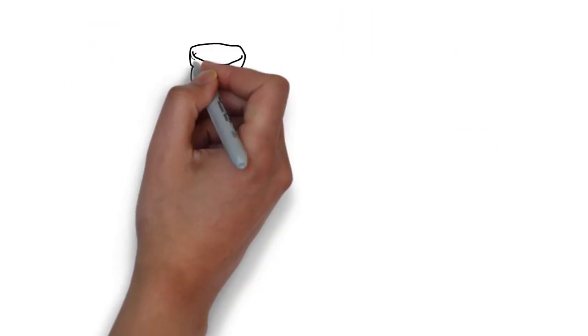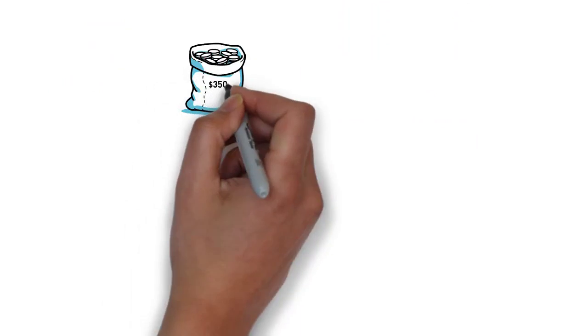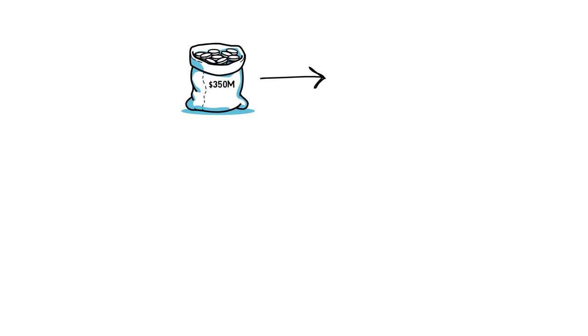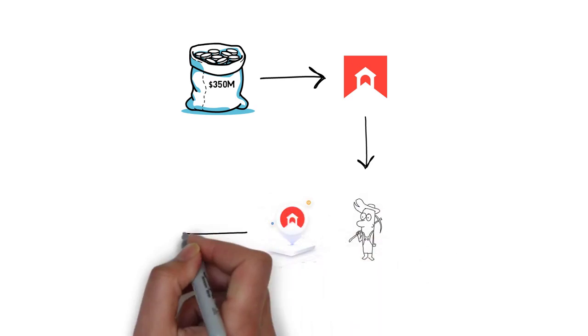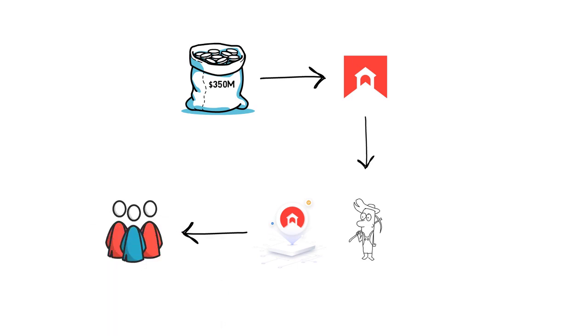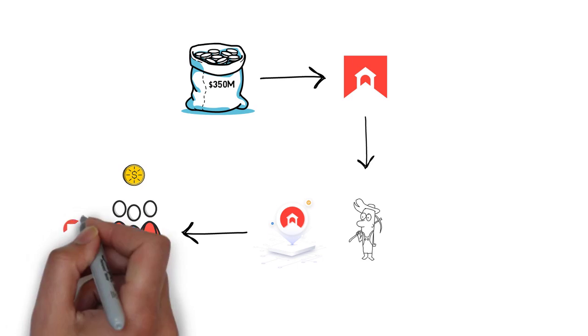There is currently over $350 million of total value locked in the protocol. BarnBridge is also running a liquidity mining program that distributes its token BOND to all users who stake stablecoins, Uniswap BOND USDC LP tokens or BOND tokens on their platform.